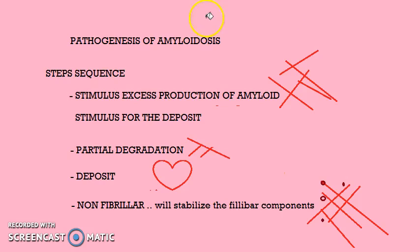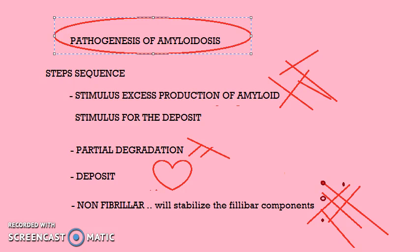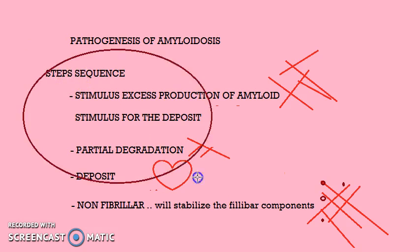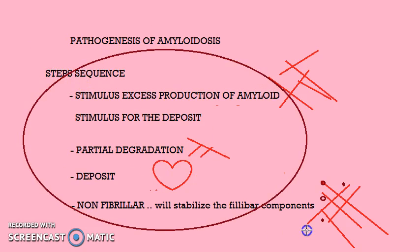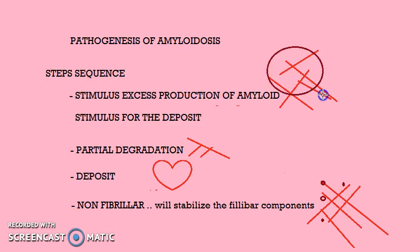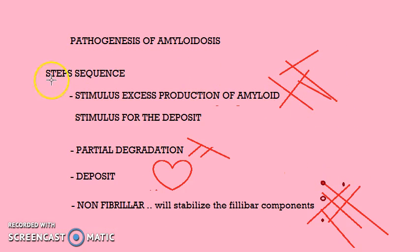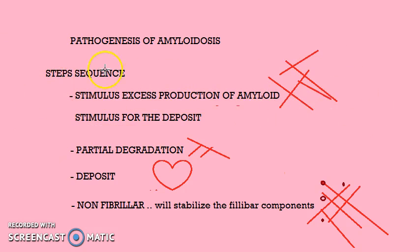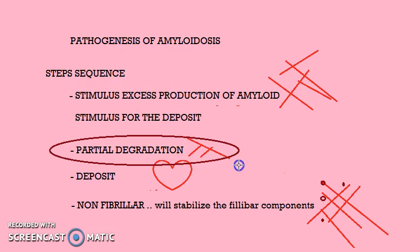We are looking at the pathogenesis of amyloidosis. Our focus was on the sequence of steps: there is a stimulus for the excess production of amyloidogenic proteins — that's what we covered in the last class. This forms the first step. Then you have partial degradation before the deposit itself.